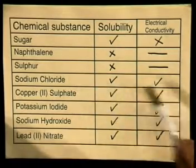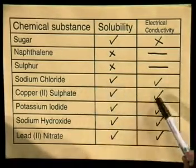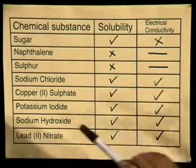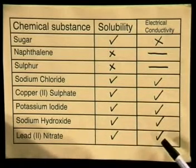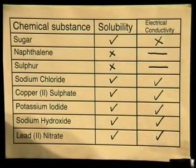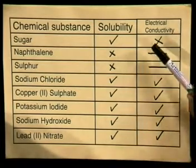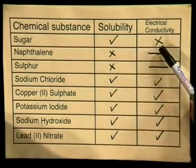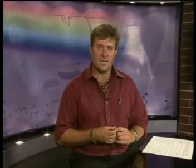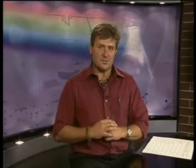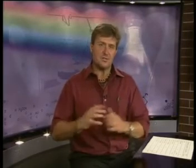Sodium chloride, copper sulfate, potassium iodide, sodium hydroxide, and lead nitrate all test positive for electrical conductivity, while the sugar solution tests negative. Why are these five chemical solutions able to conduct electricity? All of these solutions contain charged particles called ions, and these ions are free to move in the solution. But where did these ions come from? Let's have a look at the chemical formula of one of these substances to find out more.